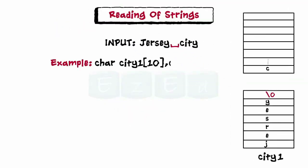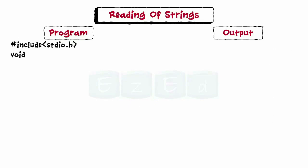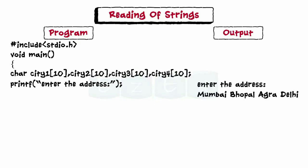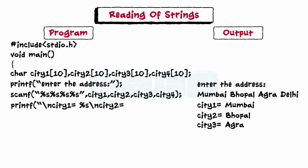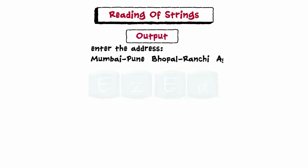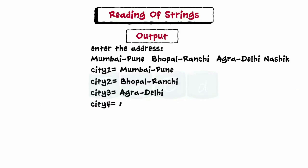If we wish to read the entire line, we have to read it in different ways. In a program using scanf, multiple variables each store a location name. When the user provides input with spaces, the compiler scans each word separately and stores it in different variables, since scanf does not ignore white spaces.